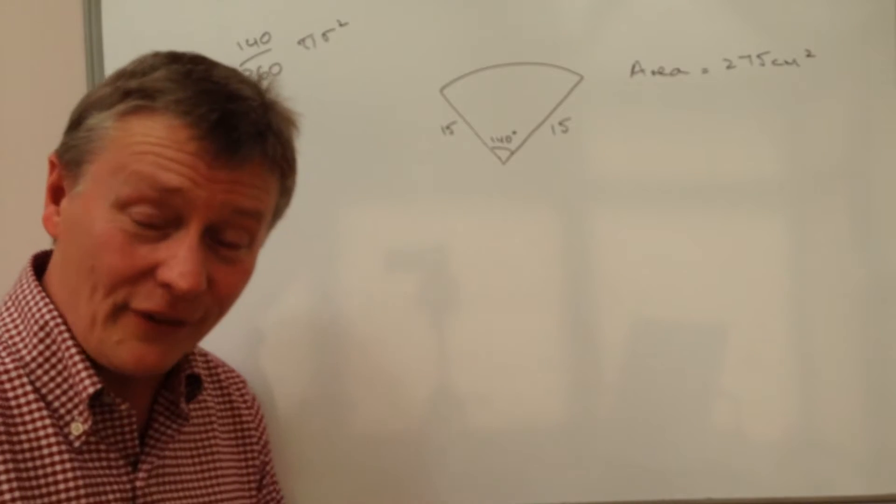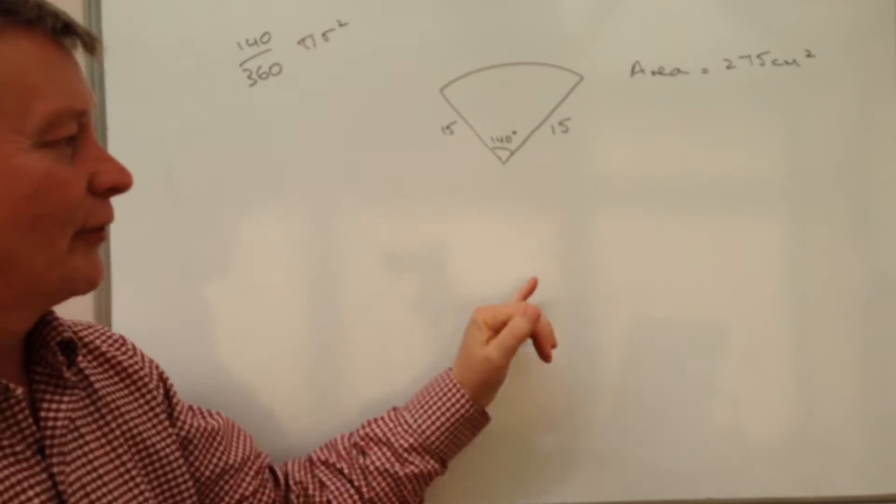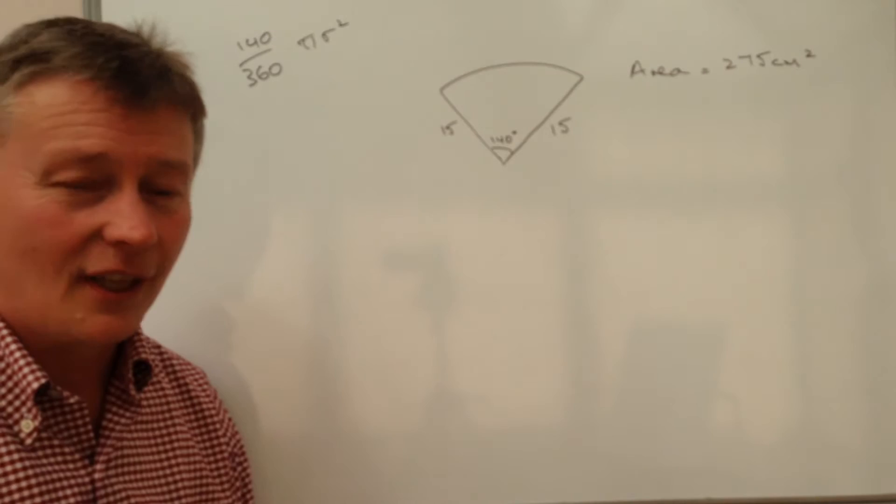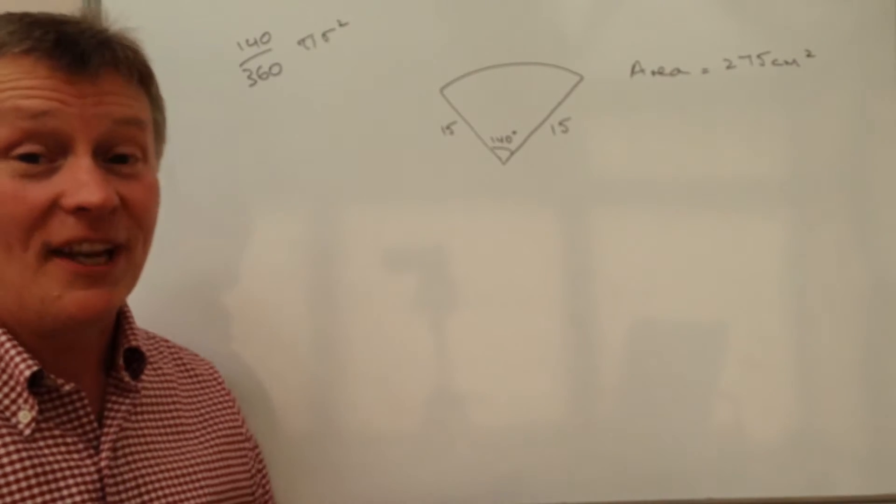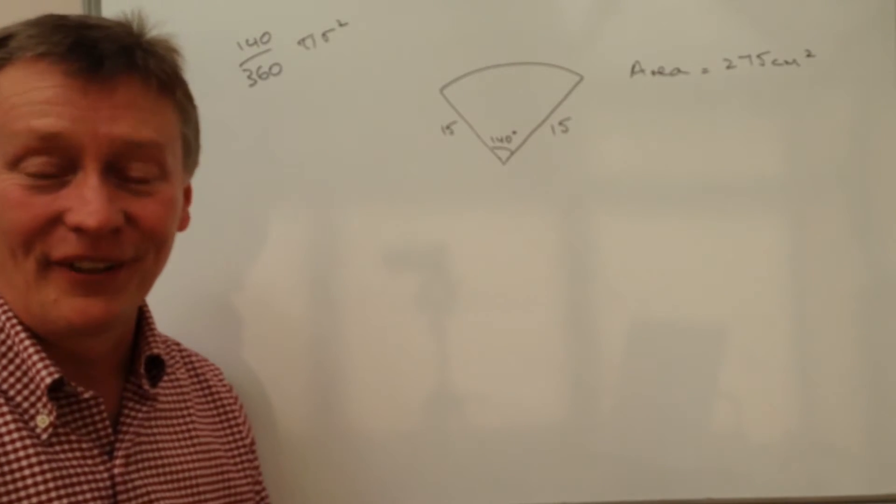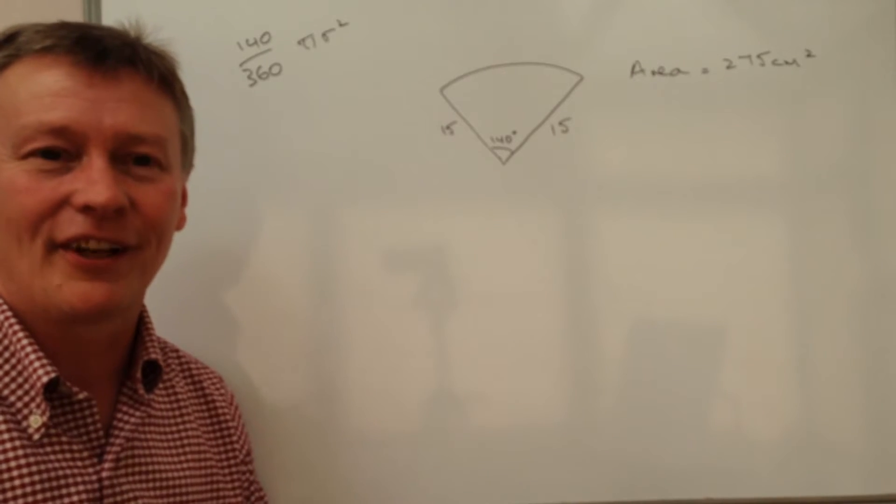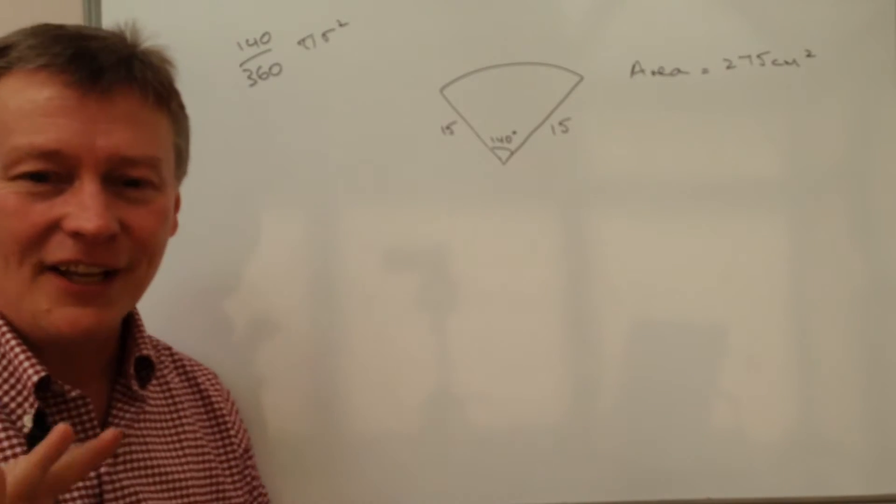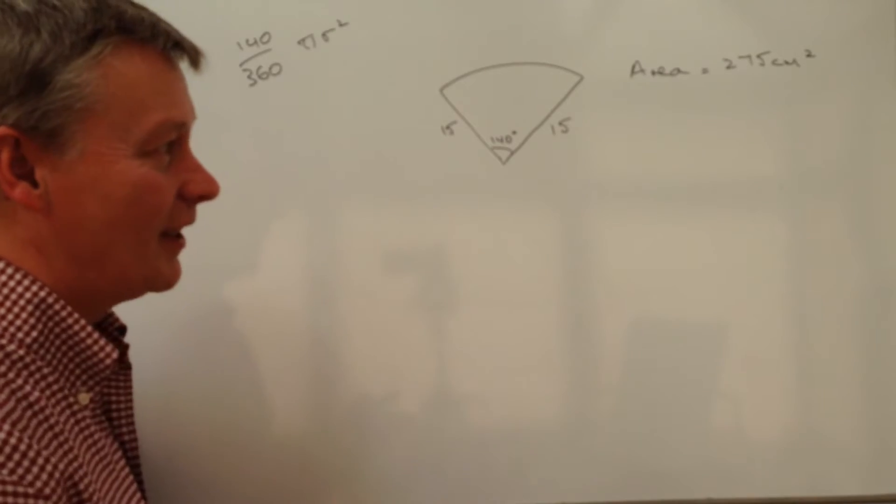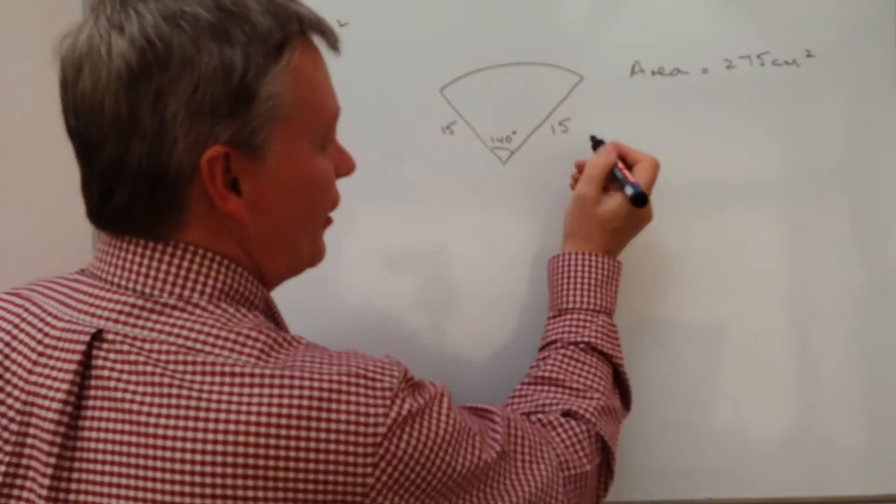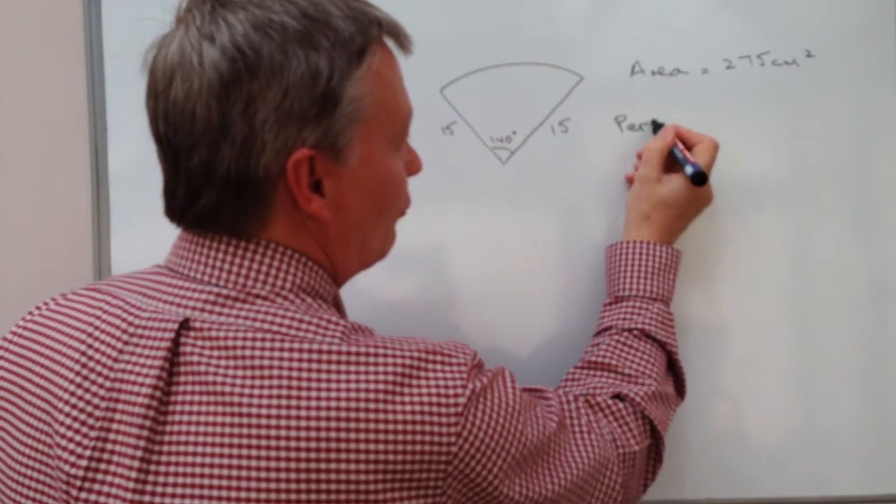Now that gave us an overall area to three significant figures of 275 centimetres squared. And if you look at the previous video, that will take you through the process of that particular calculation. However, there is a part B, as there usually is with a lot of these questions, which are pitched at kind of higher levels of A to A star type grade.